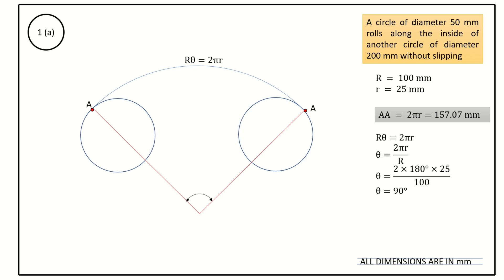Without measuring the length AA equal to 2πr, we can easily locate point A if we know the angular dimension θ equals 90 degrees. With this basic knowledge, let us now start the construction of hypocycloid in a step-by-step method.